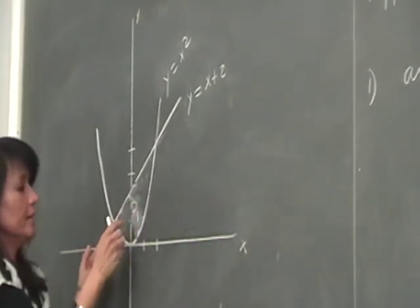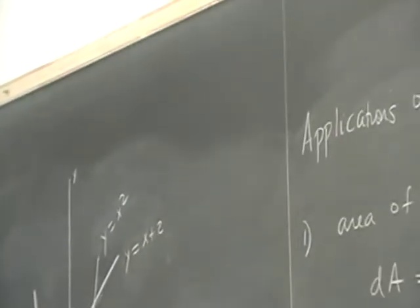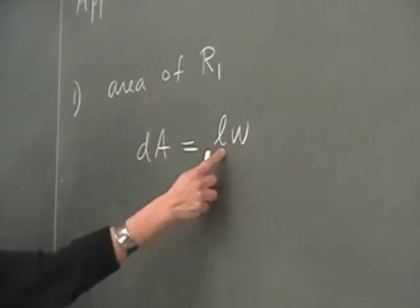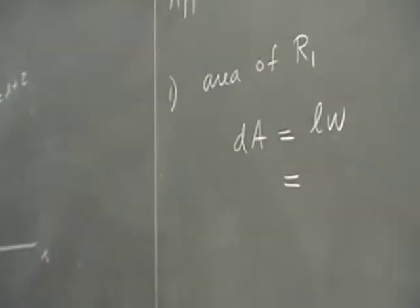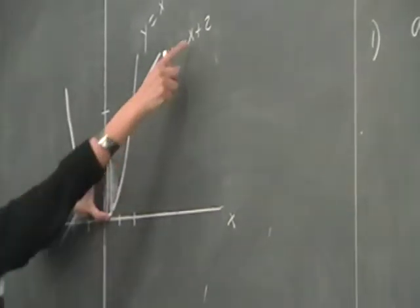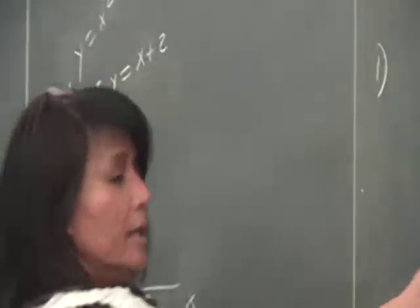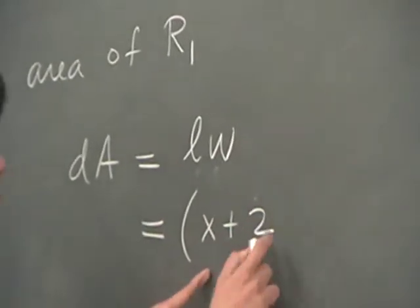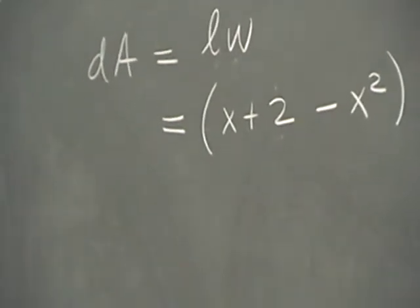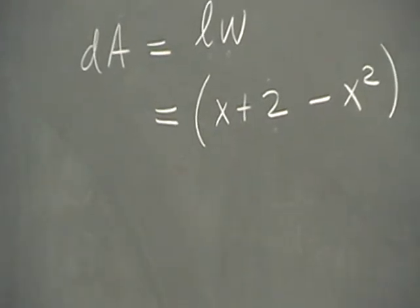To find the area of region 1, we can use vertical strips — a representative element of area as a vertical rectangle — and use the formula for the area of a rectangle: length times width. The length is the y of the line minus the y of the parabola, which is (x + 2) minus x squared. That's the y above minus the y below. The thickness is dx, so the width is dx.